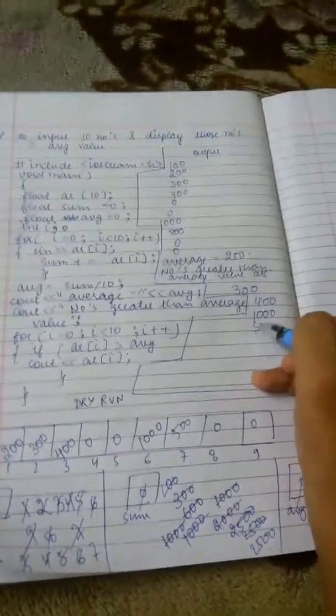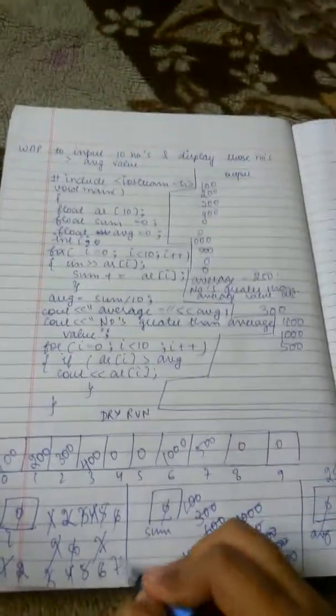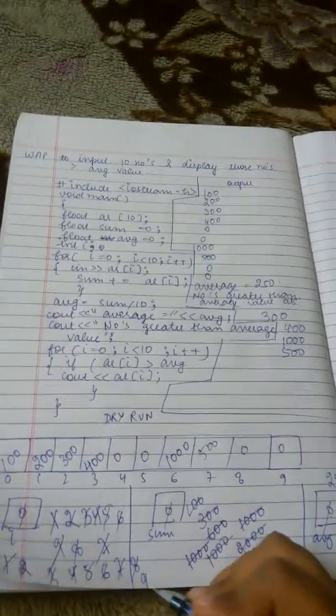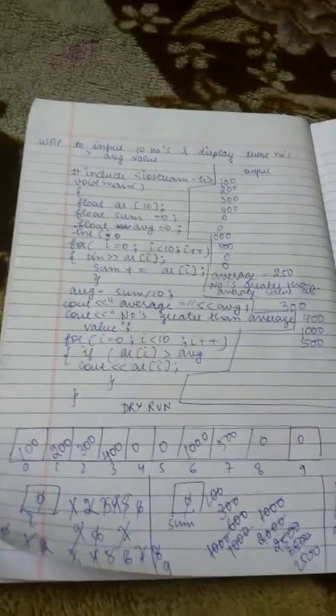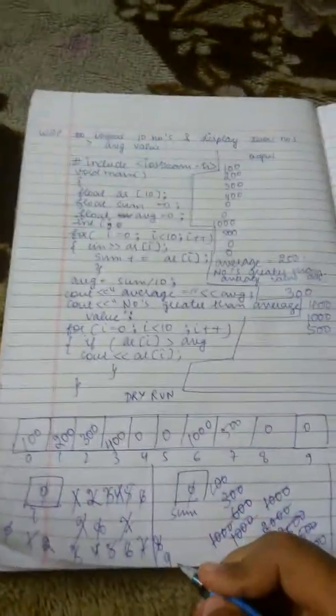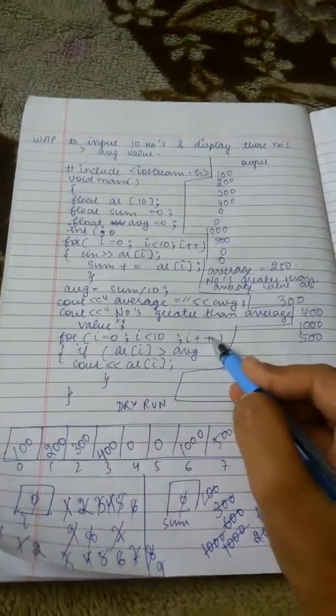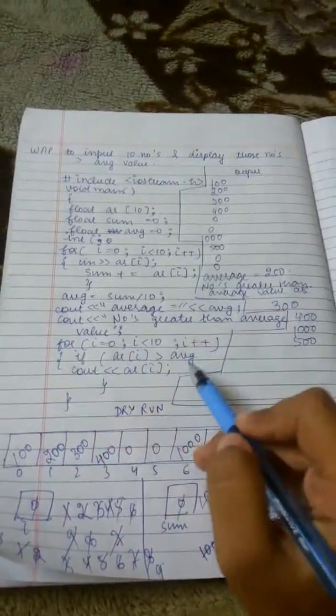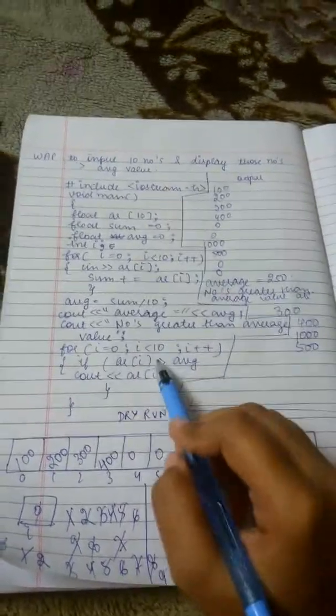And then 9, number will not get displayed. And our loop will end because when it will become 10, 10 is not less than 10, and then the loop will stop getting executed.